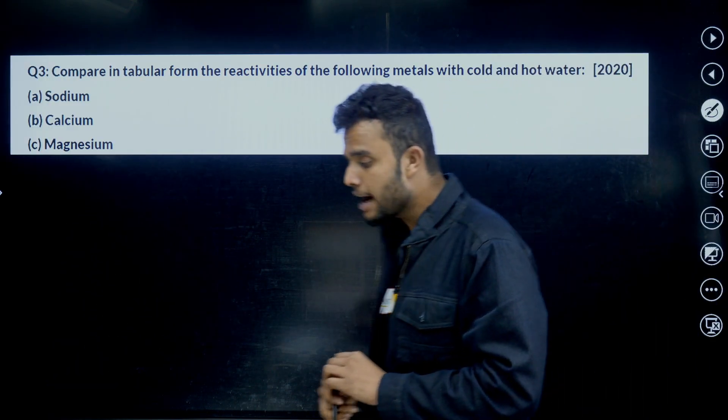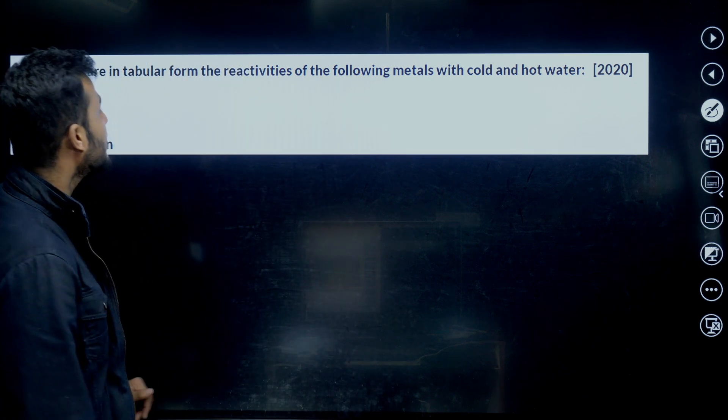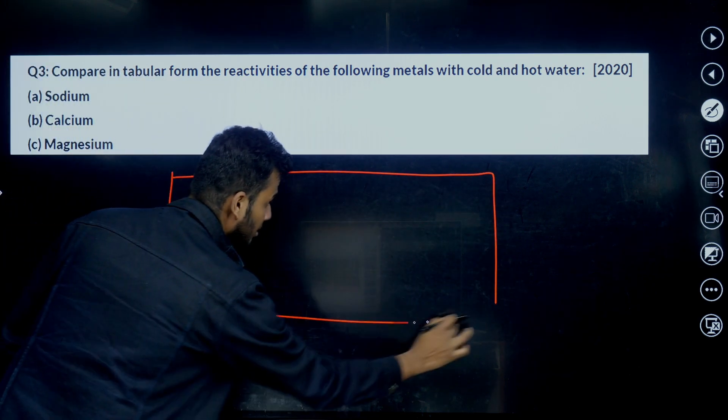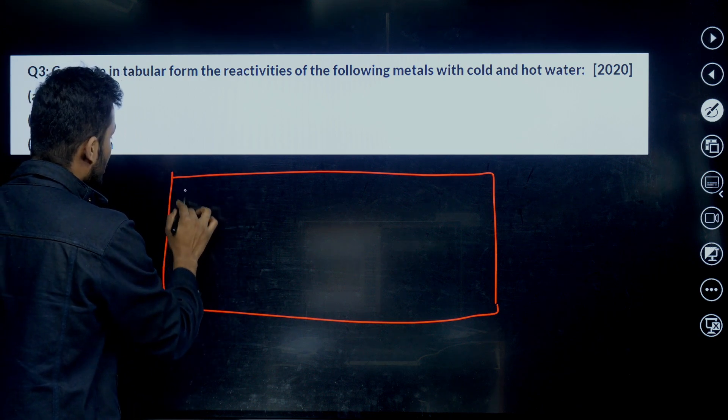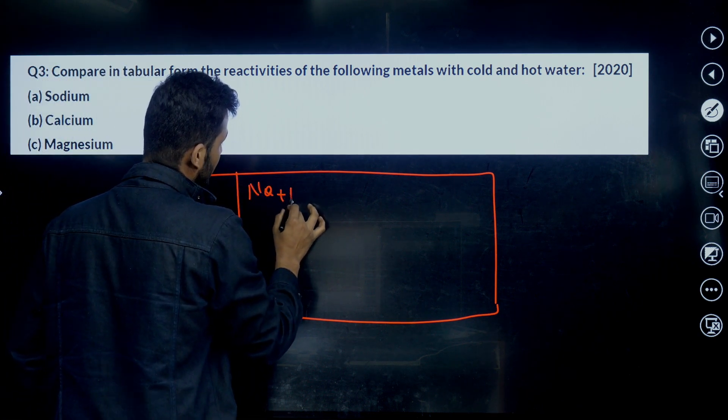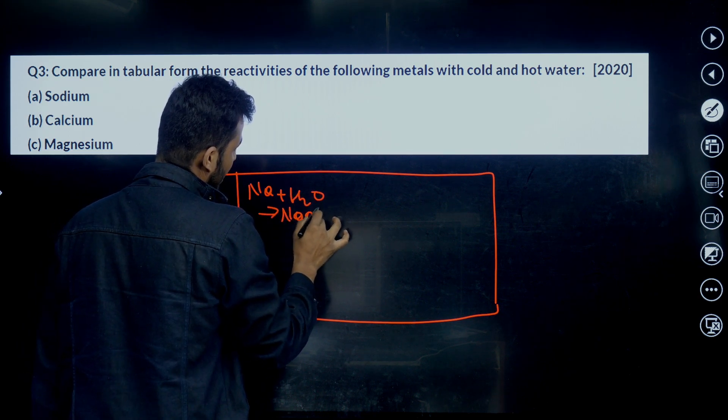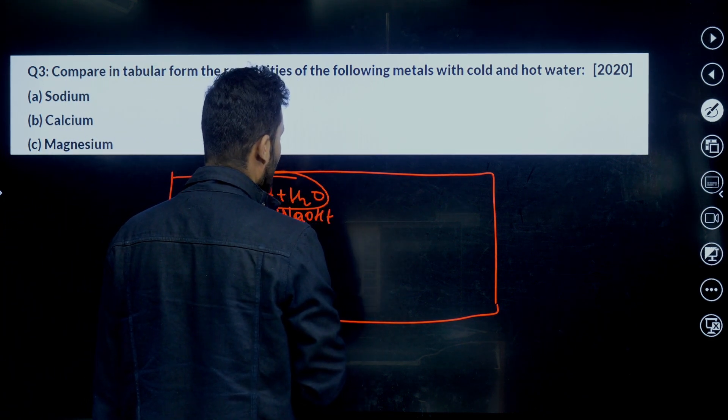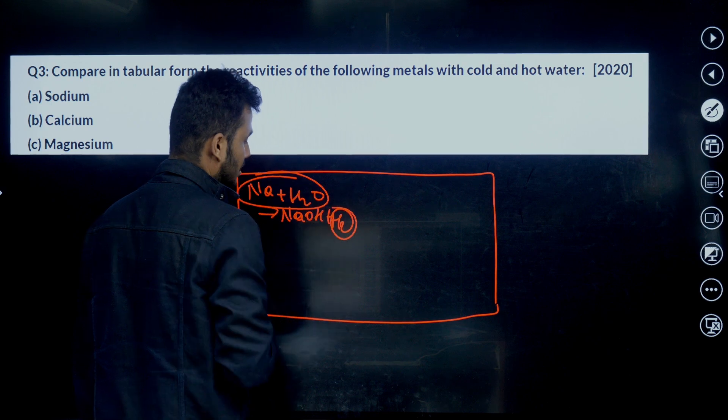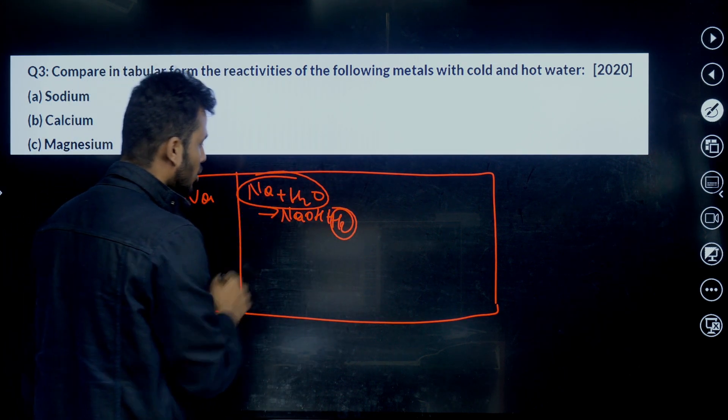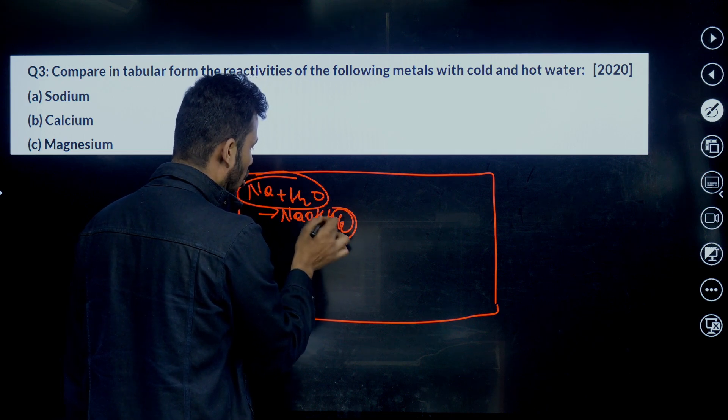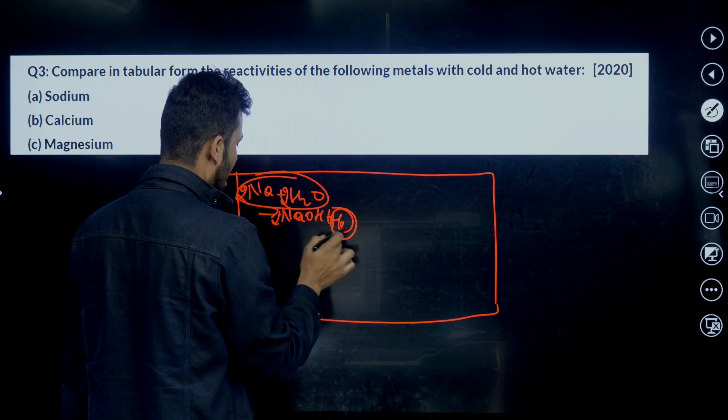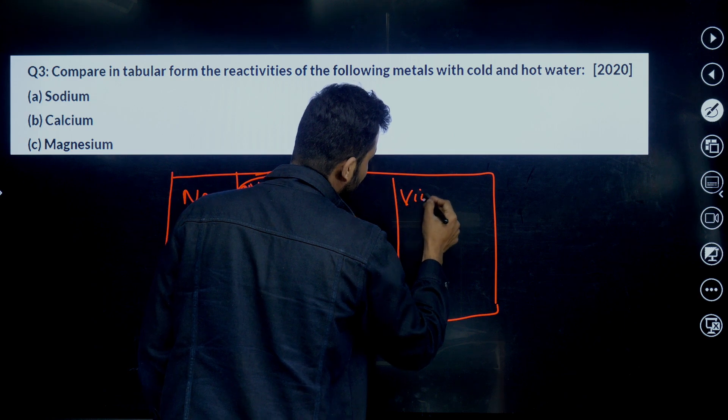Let's move for the third question. The third question is: compare in tabular form the reactivity of the following metals with cold and hot water in tabular column. 2020 paper, 2020 question, important students. The previous year questions are very very important. Let's start with sodium. Whenever sodium reacts with water, now it yields NaOH, right. It yields NaOH with H2 hydrogen gas, right. NaOH, it yields NaOH. Sodium and water react to form NaOH then magnesium oxide with hydrogen gas. Please mention the verb, please check once the reaction is balanced or not. Now it's clear.